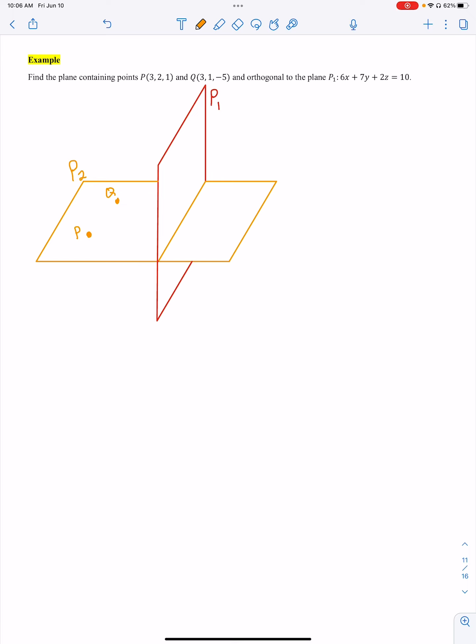And the plane is orthogonal to the plane P1, and they give us that expression. So I drew a picture to kind of help us out here. P1 is my red plane there, and I can actually take the equation here and find a normal vector for that.